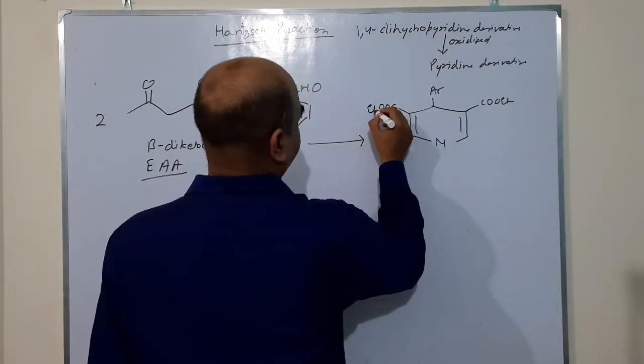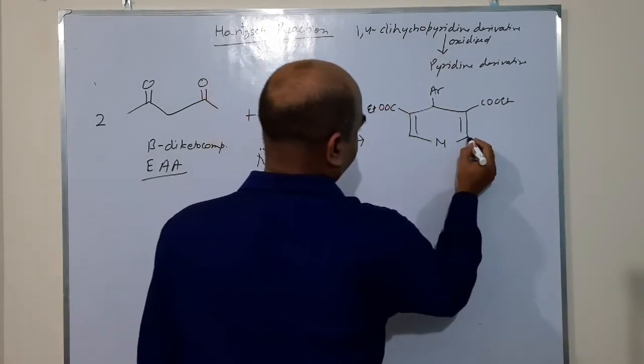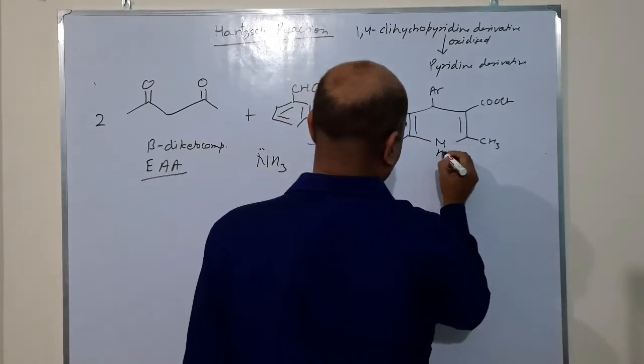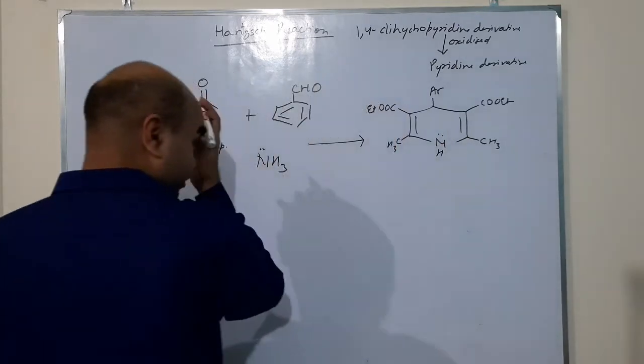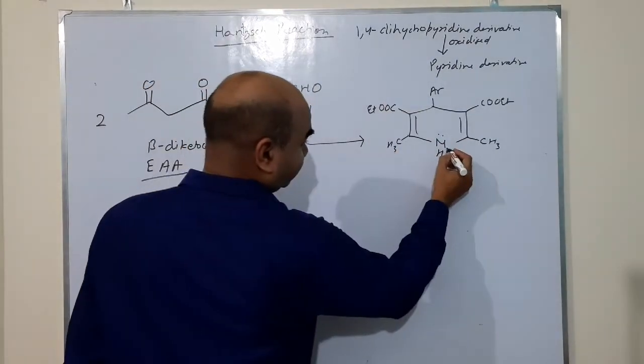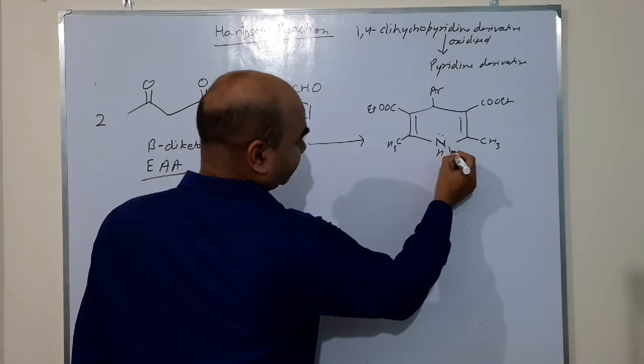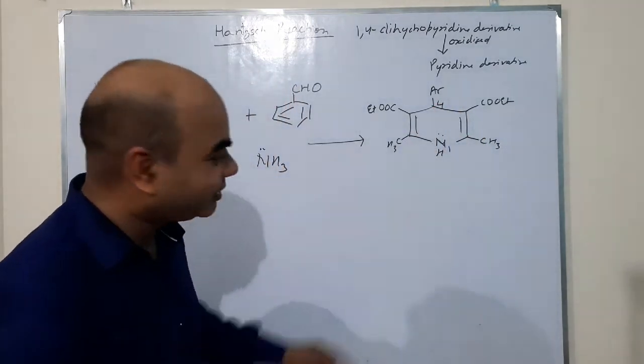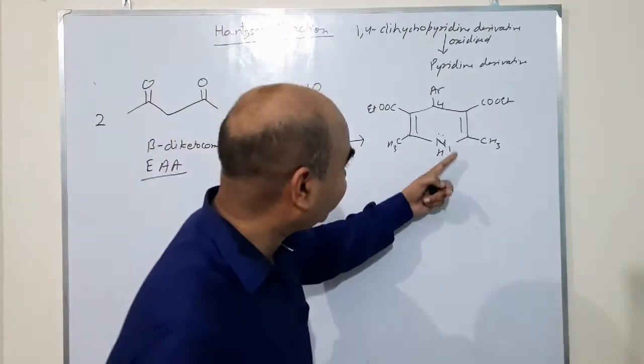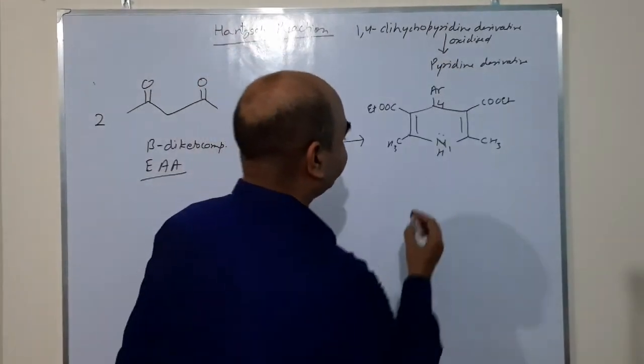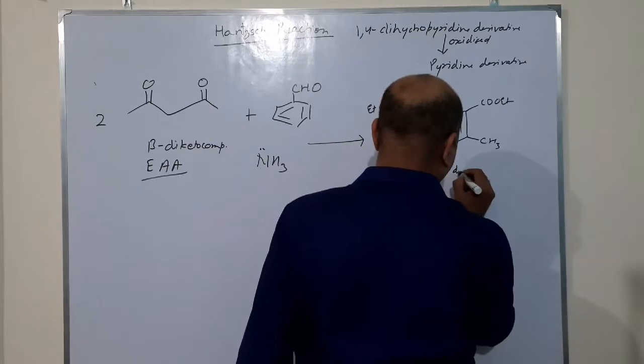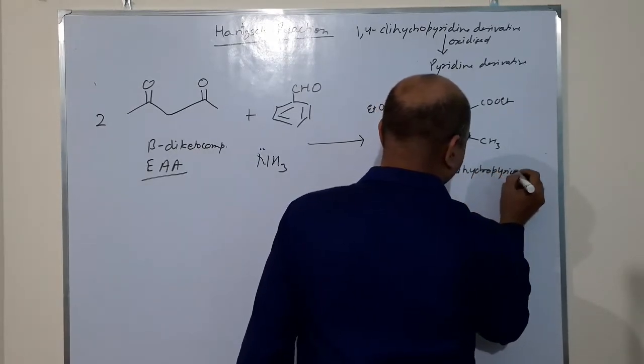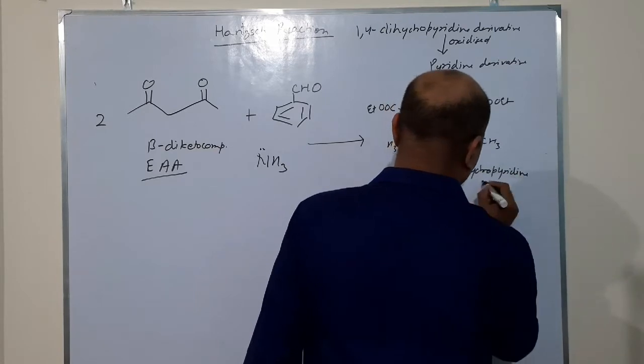The product is C6H5, COOCH2CH3, and CH3, CH3. This is 1,4-dihydro—because it is one, two, three, four—at one and four position there is a single bond, not double. So this is 1,4-dihydropyridine derivative.